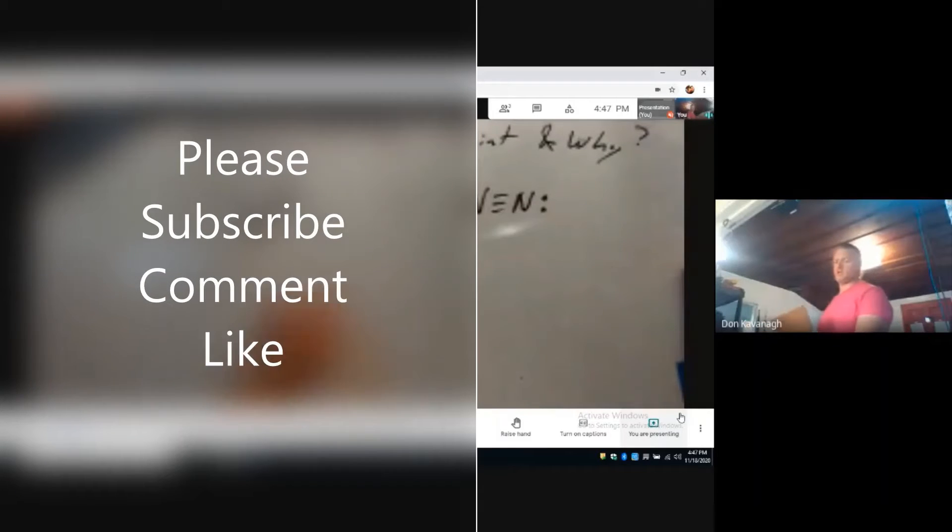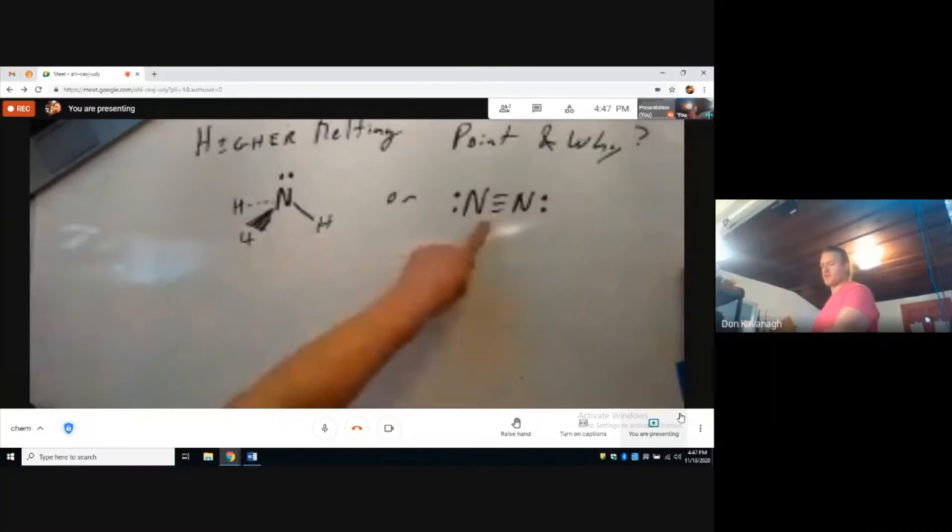Which of these two molecules, ammonia or dinitrogen gas, has a higher melting point and why? From an atomic vision perspective, what happens when matter transitions from a solid to liquid phase, i.e., melts?